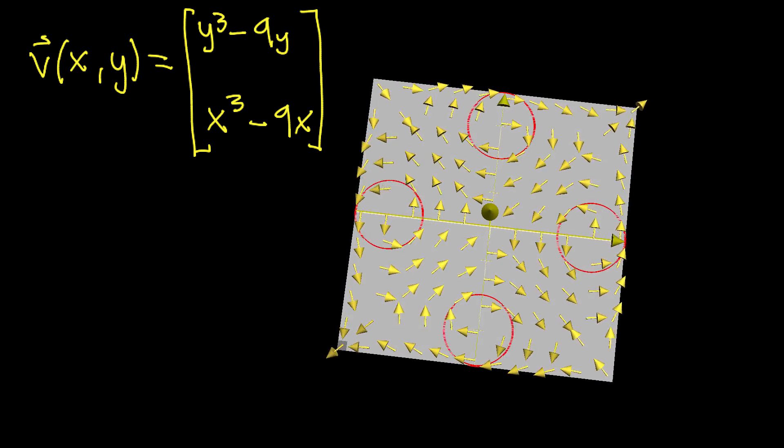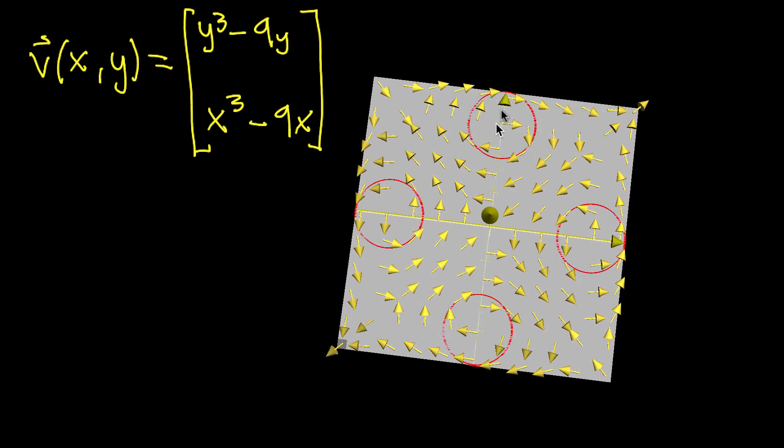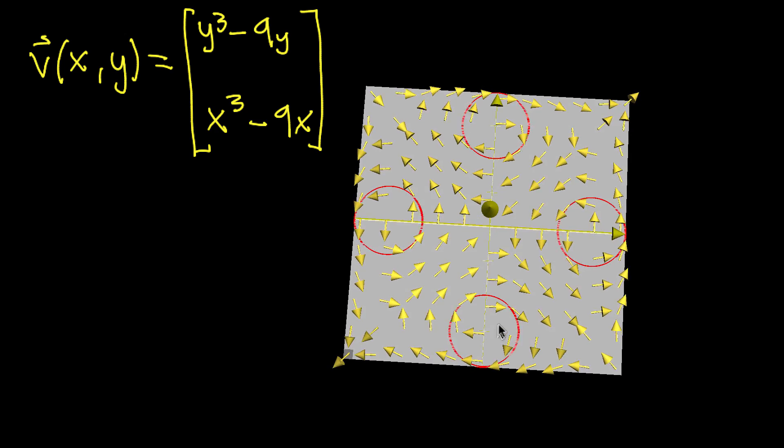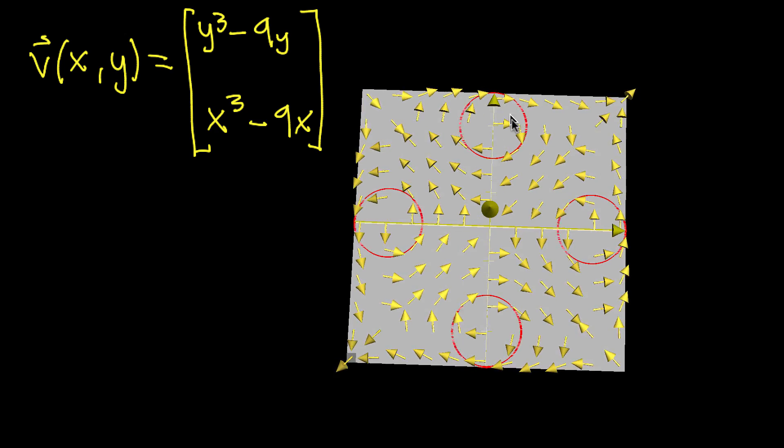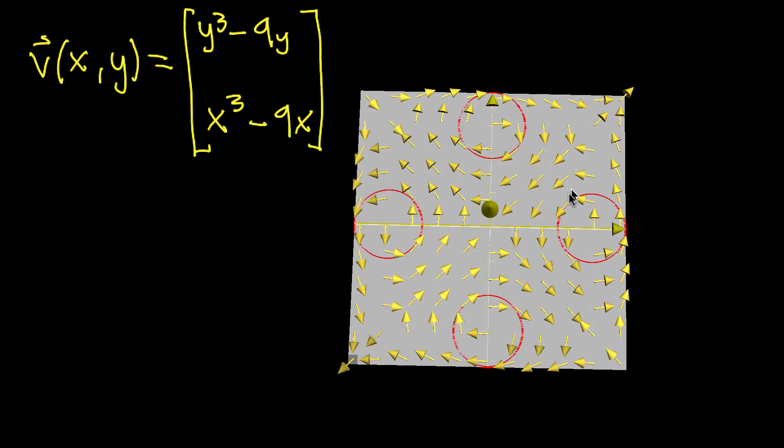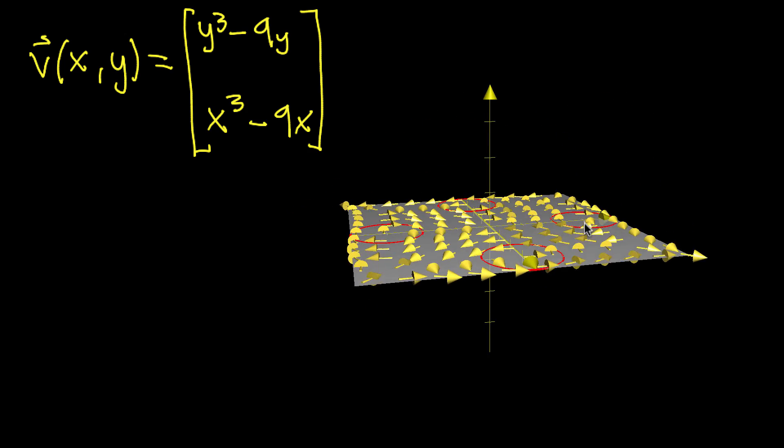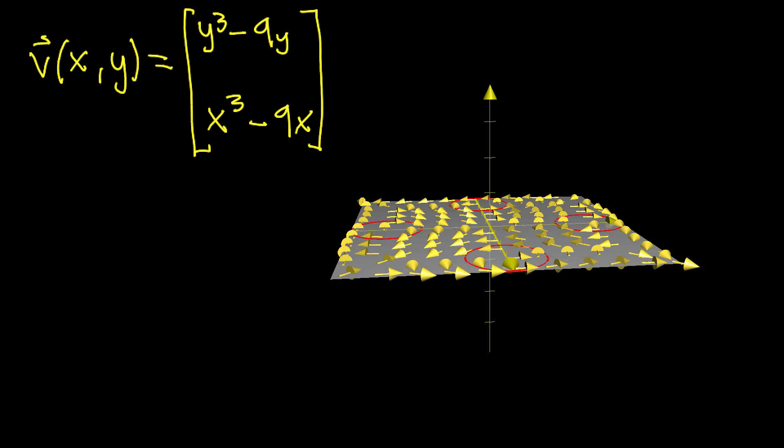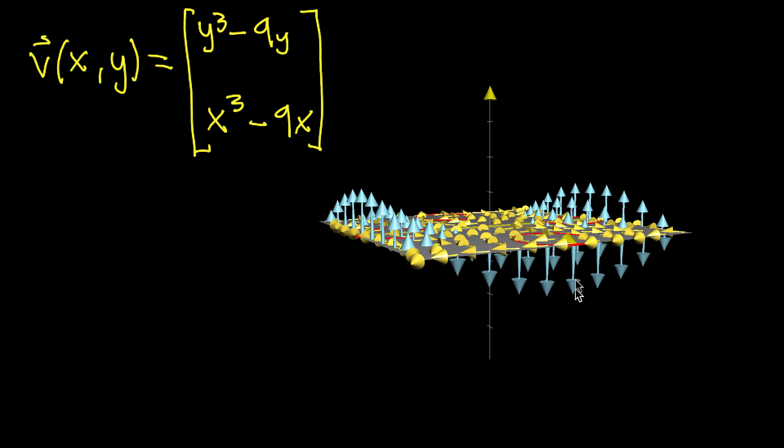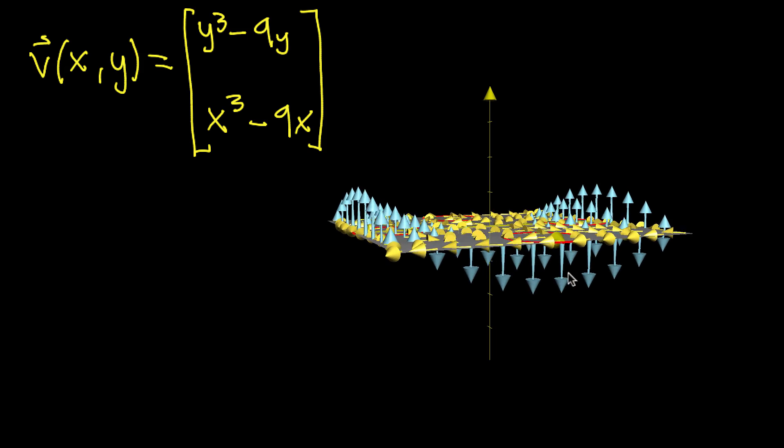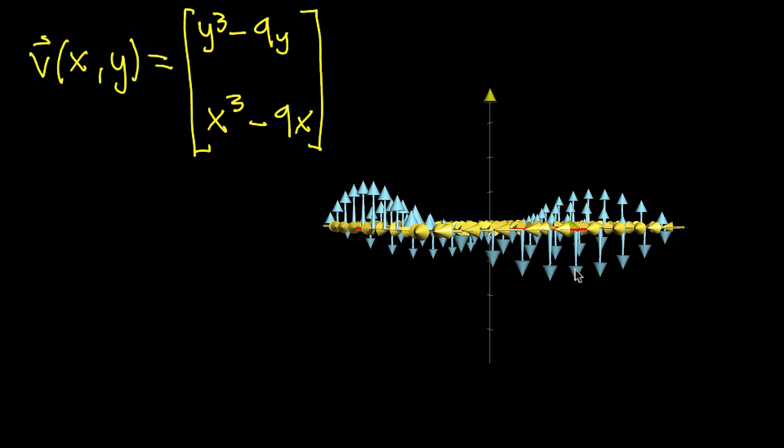But then what about at a different point? What about up here at the top where you have clockwise rotation? Well there, if you imagine taking the fingers of your right hand and curling them around that direction of rotation, your thumb is going to be pointing straight down. It will be kind of in the negative z direction. And we see that with this vector field here, where below that circle, below that point, you have vectors pointing straight down indicating that that's the direction of rotation in that region.